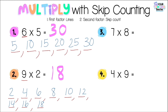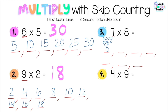Now we're doing number three: seven times eight. Seven times means I draw seven lines: one, two, three, four, five, six, seven. We're skip counting by eight, which is the second factor, so I write eight on my first line. If we feel a little shaky skip counting by eight, no worries — I'm going to draw eight circles on top to help. So I have eight, and now I count the circles: nine, ten, eleven, twelve, thirteen, fourteen, fifteen, sixteen.